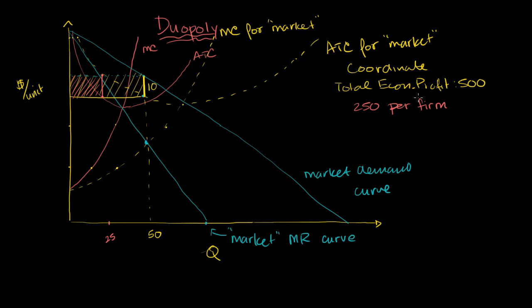Now let's think about why there is an incentive for one or both firms to cheat. Say one firm holds at 25 units, but the other firm says, 'I like this price — I'm already making economic profit. Let me produce 10 more units.' So the cheating firm decides to produce 35 units instead of 25. With the other firm still at 25, total market production is now 60.